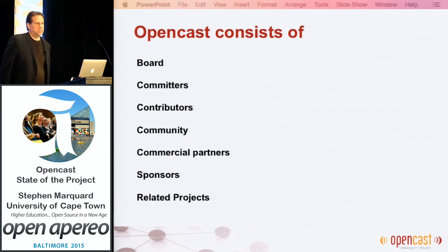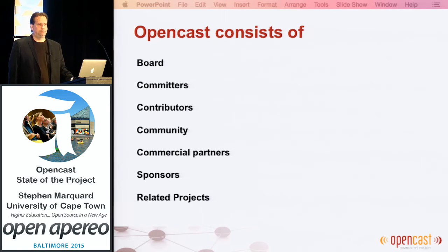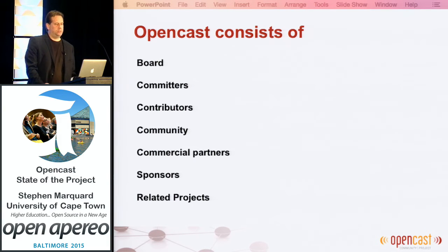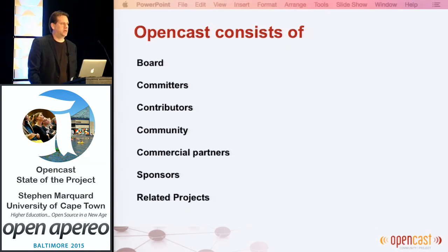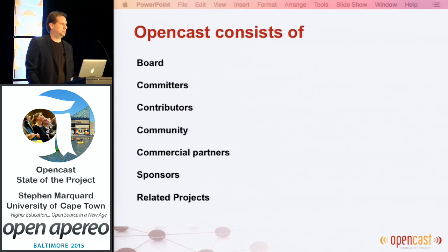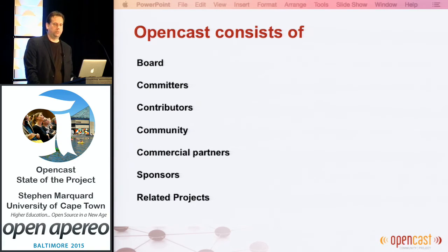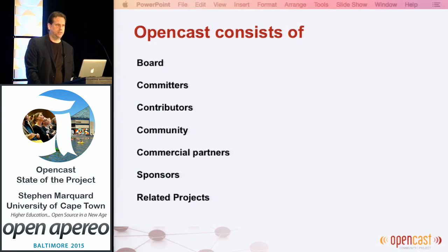OpenCast has a structure that will probably be familiar if you know Sakai and other projects in the Aperio stable, with a couple of differences given the nature of our domain. There is a board — a fairly lightweight structure that looks after project communications and initiatives such as unconferences and meetings. We have a group of committers, contributors, and a community involved in developing complementary projects. There's a strong group of commercial partners, some of whom are sponsors, and related projects designed to tie into the OpenCast ecosystem.